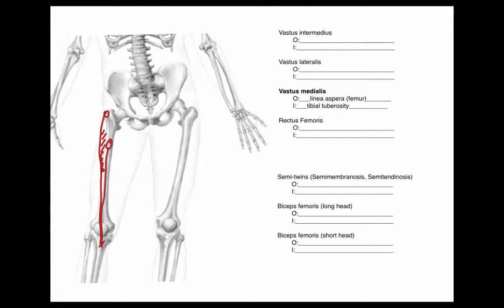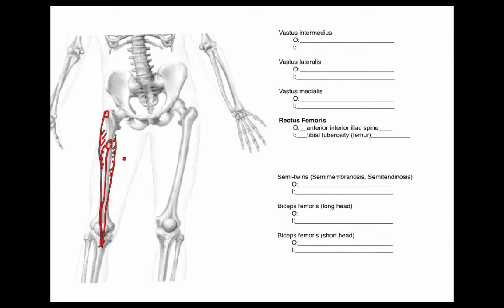Then we have vastus medialis — 'vastus' meaning large — on the medial side. This is going to originate only from the linea aspera, and it will go down and also insert on the tibial tuberosity. I'll draw a line to show that it's wrapping from the back to the front.